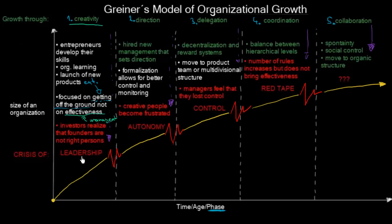Luckily, we can solve it through direction, and that is the second phase. Here, new management is hired that sets the direction. This is quite common — when there is a startup or beginning of an organizational life cycle, the entrepreneurs quite often move away from managerial positions and professional managers are hired that set the direction. Formalization allows for better control and monitoring.